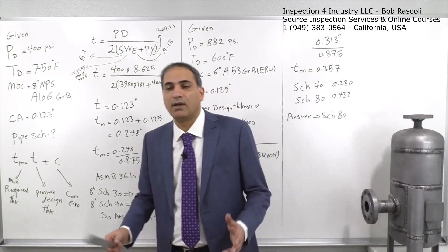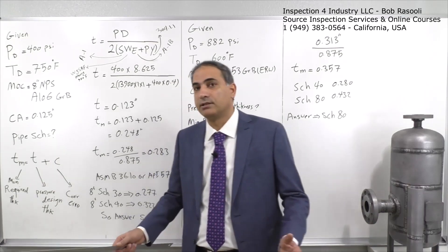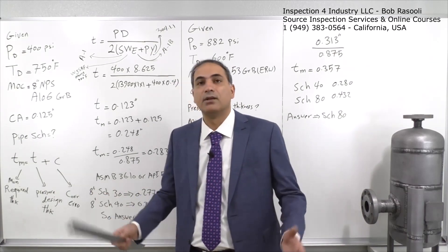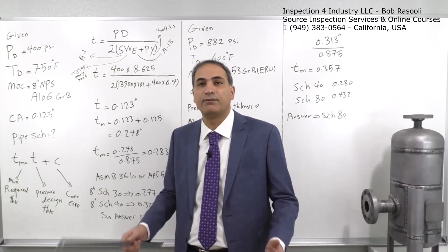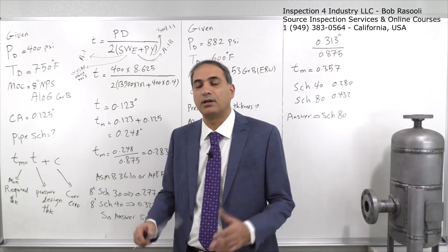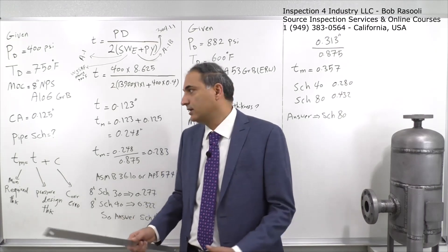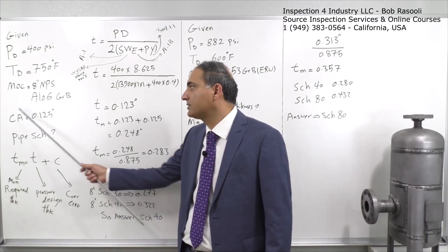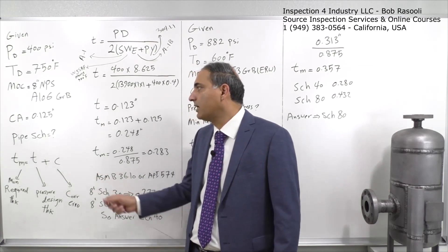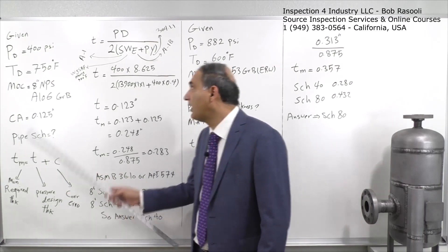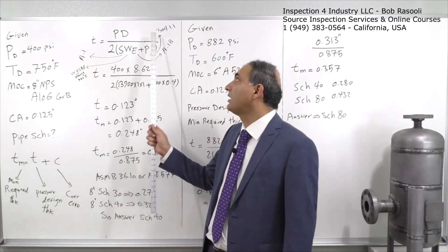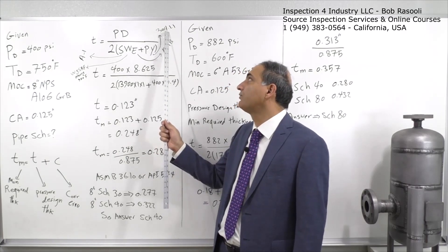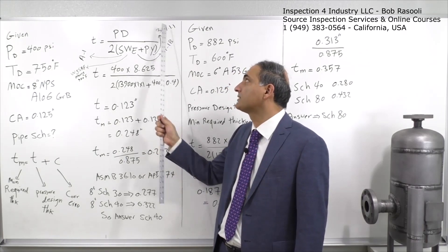Allowances may need to be added to the design thickness regarding the weight of the pipe, structural considerations, and other factors. However, the problem only specifies the corrosion allowance, so we will consider only that. To determine the pipe schedule, we refer to ASME B31.3 Section 304.1.1, which provides the formula.